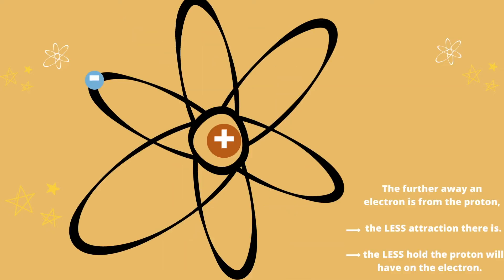With that being said, the further away an electron is from the proton, the less attraction there is. And the less attraction there is, the less hold the proton will have on the electron.